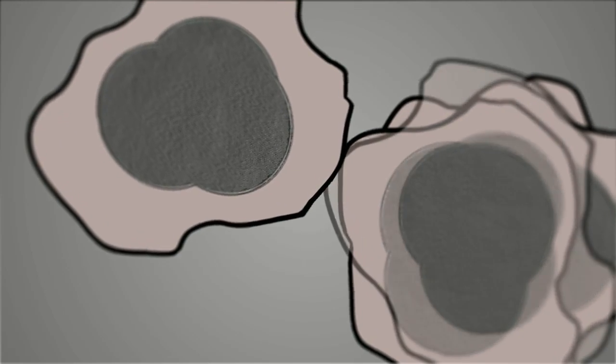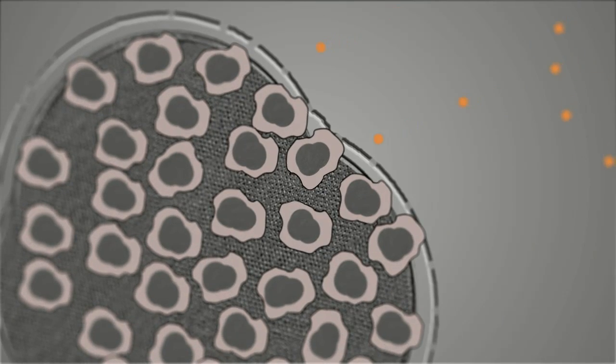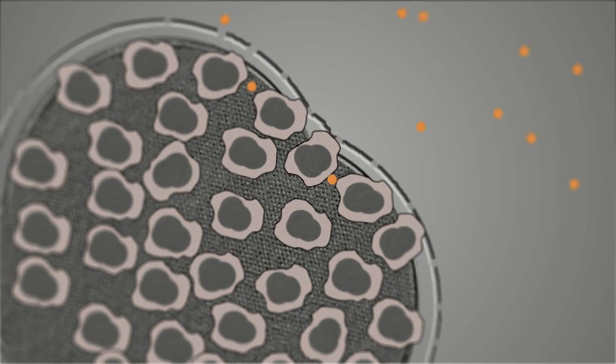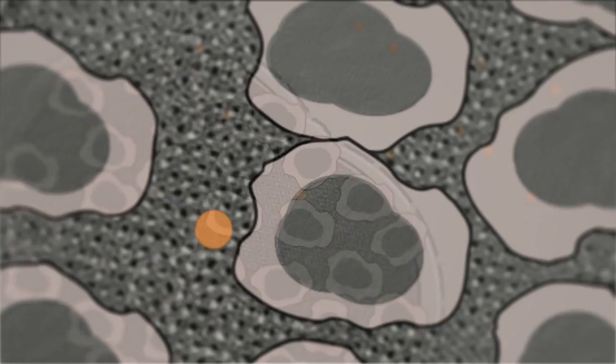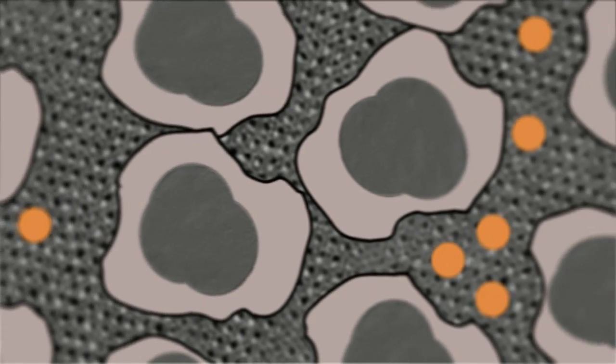Tumors, if they're growing too fast, end up with gaps and spaces and openings in between the cells. If you make particles small enough, they can get through these small gaps and openings between the cells and the vessels, and then they will accumulate in the solid tumor.